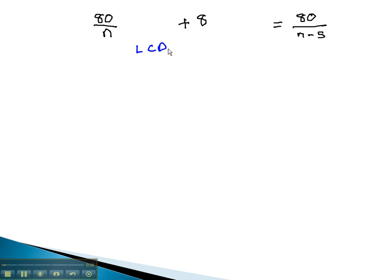We can solve this rational expression by finding the least common denominator of n times n minus 5, and multiplying each term, including the 8, by n, n minus 5.